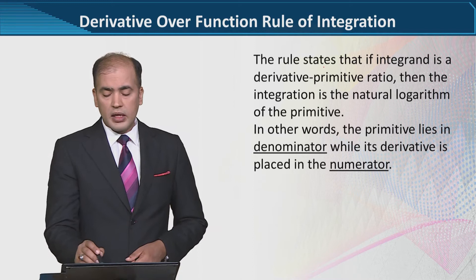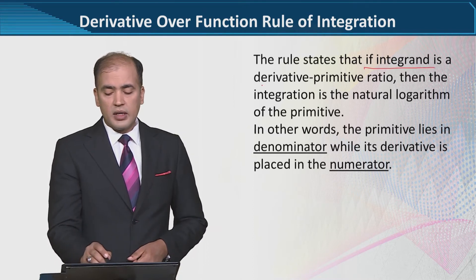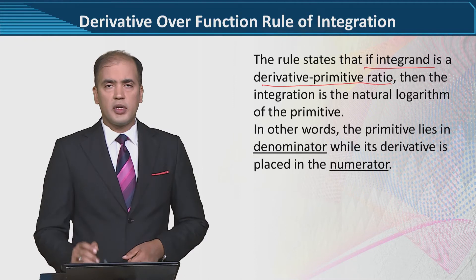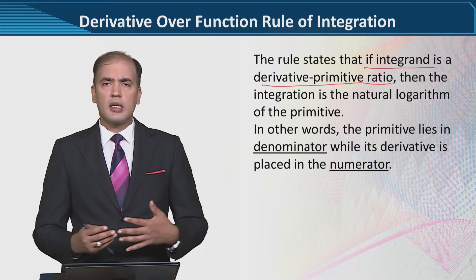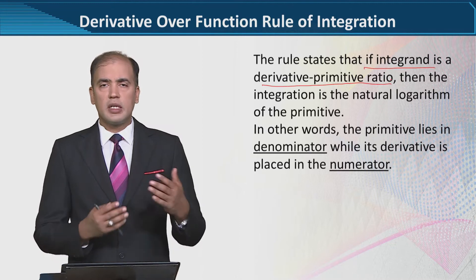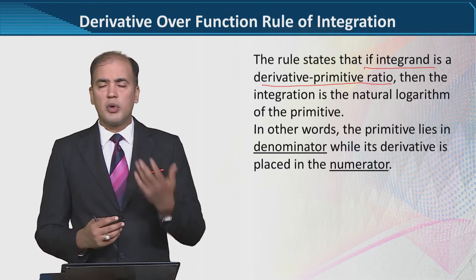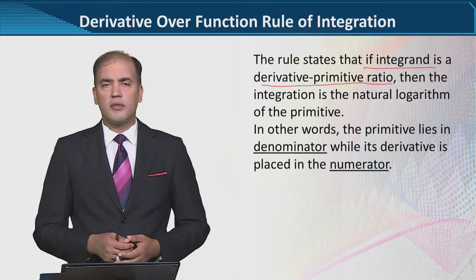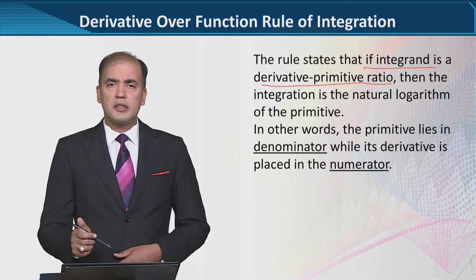The rule states that if the integrand is derivative-primitive ratio—so in our words, if we explain the rule statement, the situation is derivative over primitive ratio. The derivative is on top and below is the original function, that is the primitive.